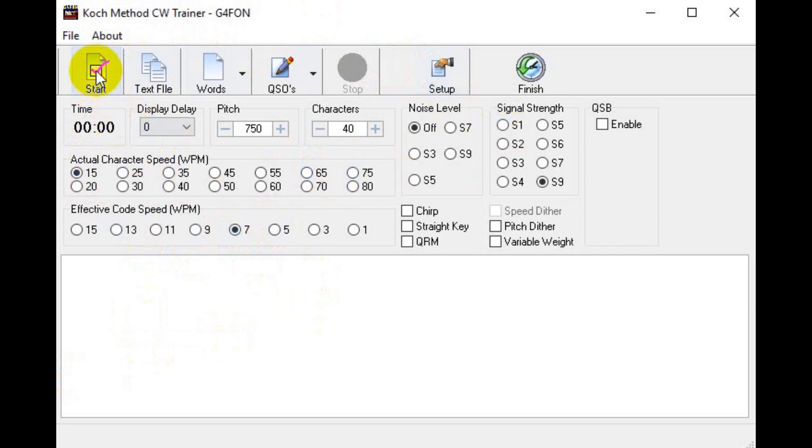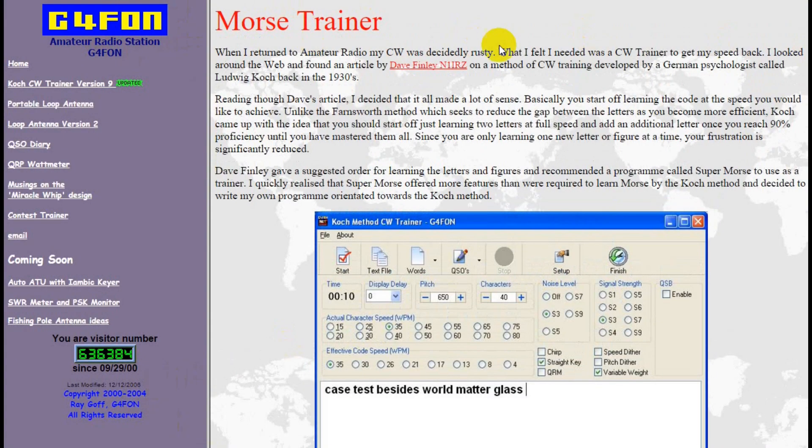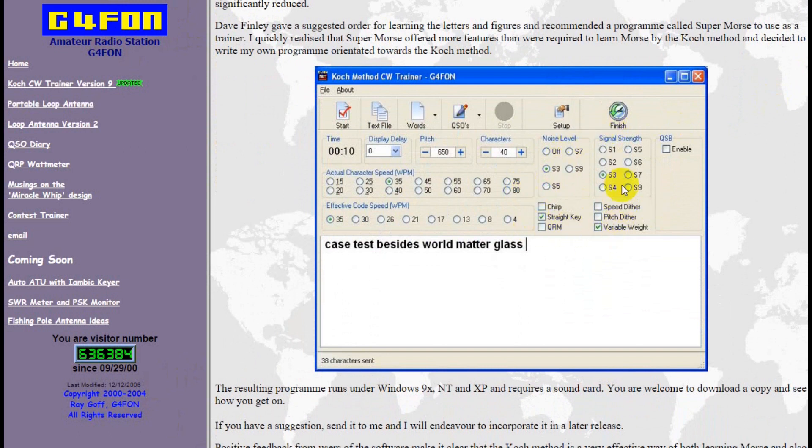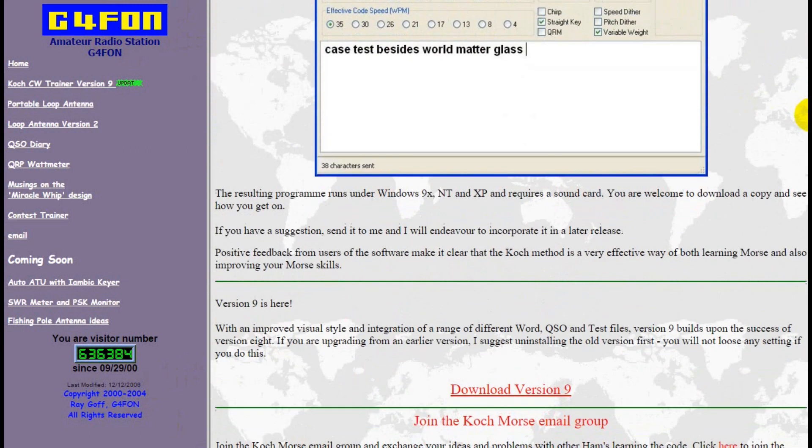A newer method has emerged that is built on the Farnsworth method. It's called the Koch method. It introduces characters a couple at a time and as you get better, it adds characters to the mix. As you learn the characters, your speed improves. The website lcwo.net allows you to do this method online. I personally prefer a Koch trainer that's a download from g4fon.net because it gives you the ability to add realistic fading and interference much like you'll encounter on the air.